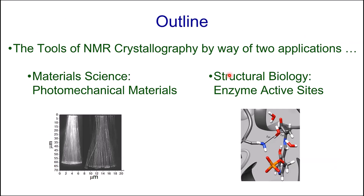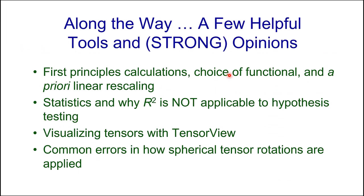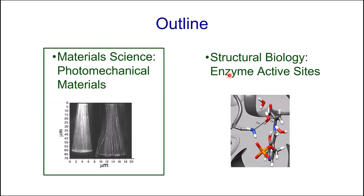Inspired by David's work, today I want to discuss the tools of NMR crystallography by way of two applications: the first is material science and photomechanical materials, and the second will be structural biology and enzyme active sites. Along the way I'll offer comments on tools including first principles calculations, choice of functionals, the requirement for a priori linear rescaling, an introduction to statistics and why R-squared is not applicable to hypothesis testing, our program TensorView, and inconsistencies in the literature regarding tensor rotations in spherical tensor form.